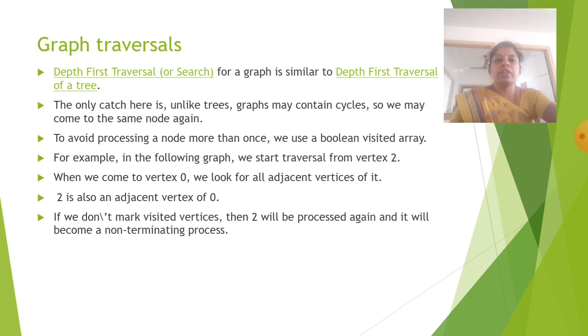The next is depth first traversal. The depth first traversal of a graph is similar to depth first traversal of a tree. The only catch here is unlike trees, graphs may contain cycles, so we may come to the same node again. To avoid the processing, it is similar to the breadth first search.